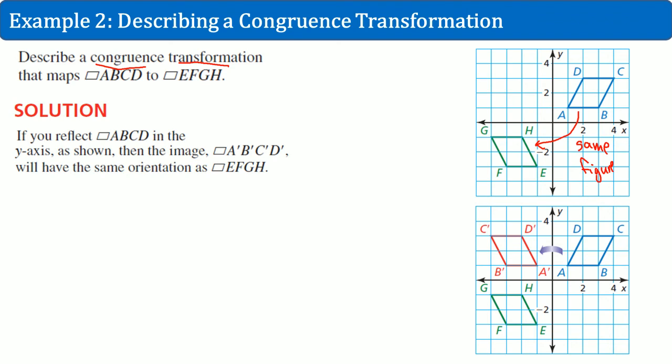Here's the solution. First of all, they say they reflected it. So this was the reflection. And when you tell the reflection, you have to say what line. And they say it's about the Y-axis. Then it was translated or slid down and it's slid down four units. One, two, three, four.